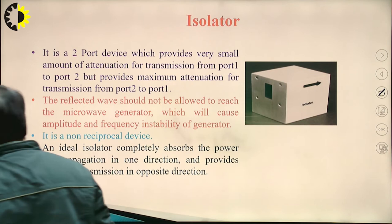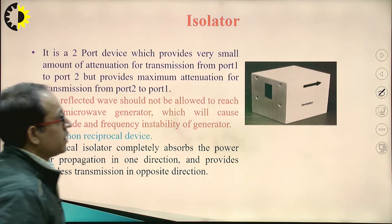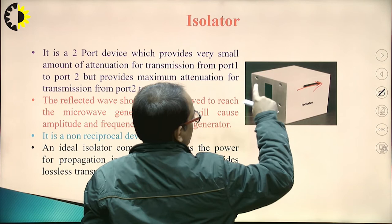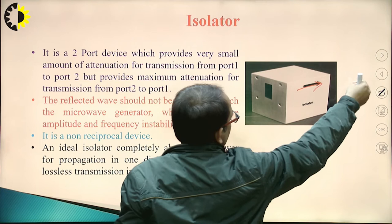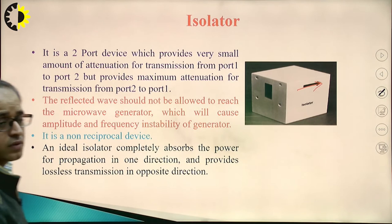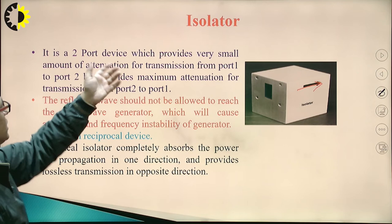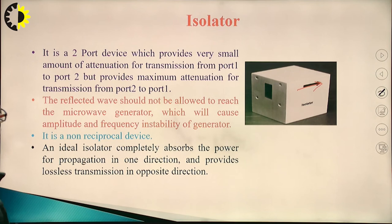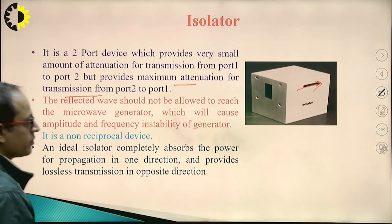The first application is the isolator. It is a two-port device which provides a very small amount of attenuation for transmission from port 1 to port 2, but provides maximum attenuation for transmission from port 2 to port 1. If input is provided at port 1, output is obtained at port 2 with minimum attenuation. But if input is provided from port 2, output will not be obtained at port 1 because maximum attenuation is applied.